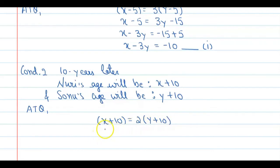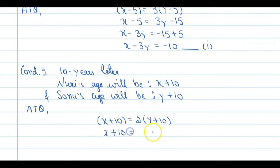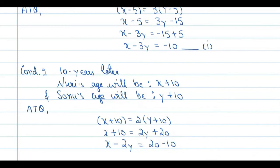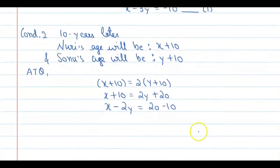Simplifying: X plus 10 equals 2Y plus 20. Rearranging further, X minus 2Y equals 20 minus 10, which gives X minus 2Y equals 10. This is Equation number 2.